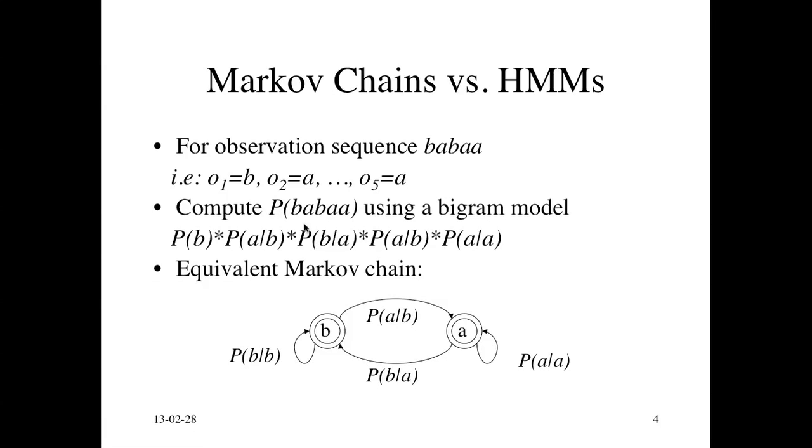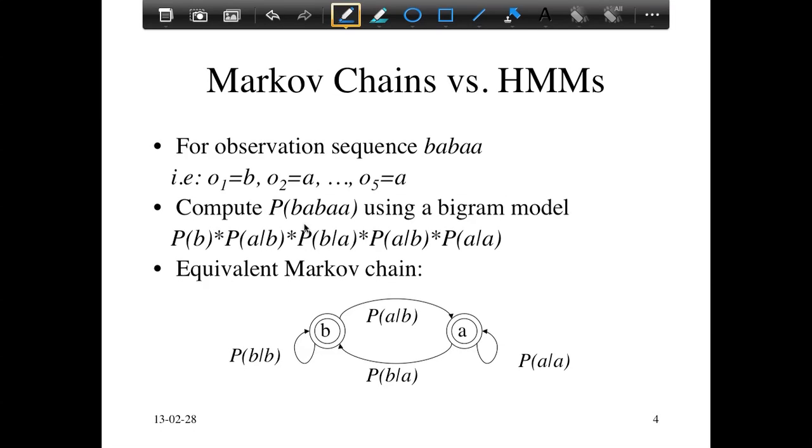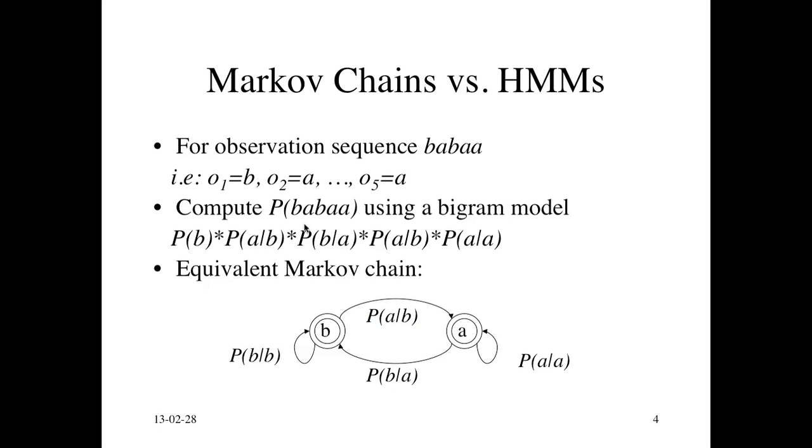And that's what it looks like. So the states are the actual words in the observation sequence. Sorry, the observations in the observation sequence are the states. And then the transitions are the probabilities. So in this case you have the probability of having an A follow a B is just put on the arc from state B to state A. So you can see an analogy with hidden Markov models here because in this case the states are actually observed and not hidden.